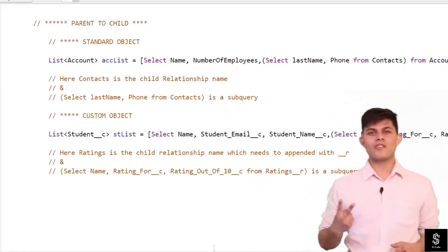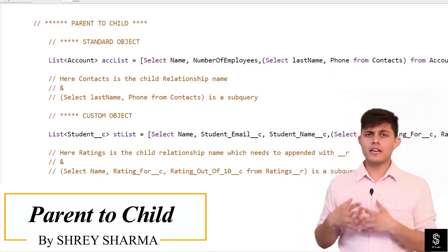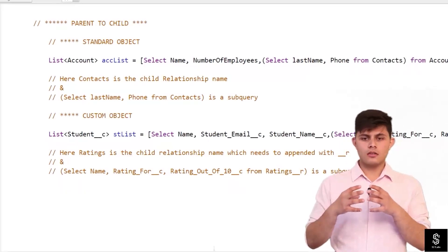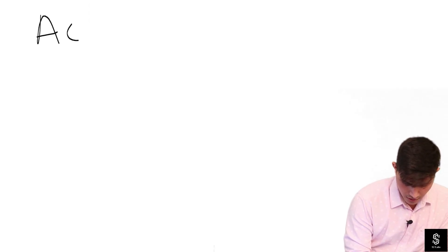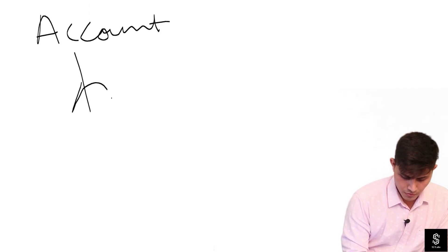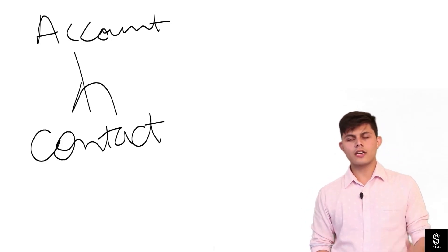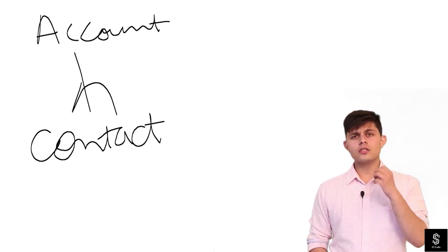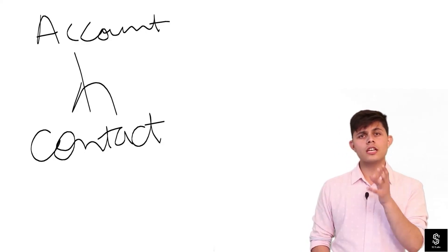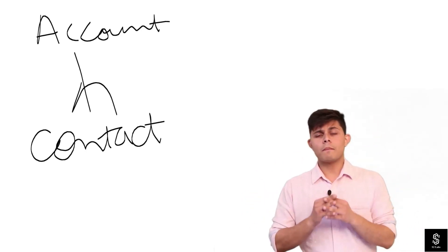Now is the time for the second type of relationship query: the parent-to-child relationship query. Similar to child-to-parent relationship queries, parent-to-child relationship queries also return the information of the related records to a particular record. For example, we have a relationship between Account and Contact. In a parent-to-child relationship query, we want to fetch the records of the parent object and also the records of the child objects associated to that particular parent record.